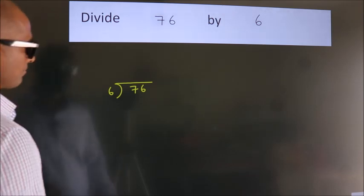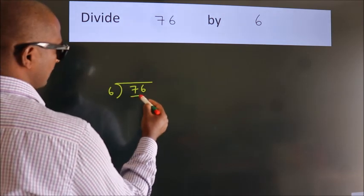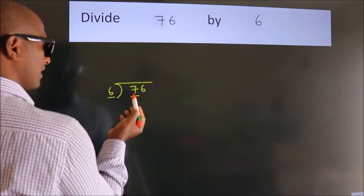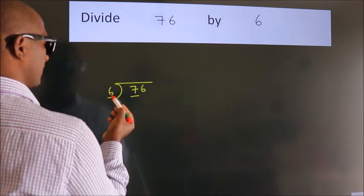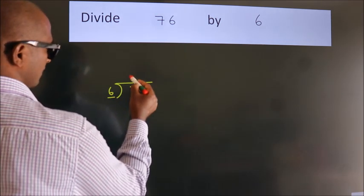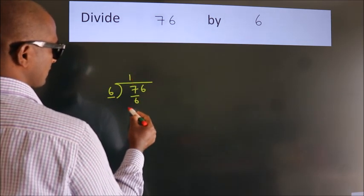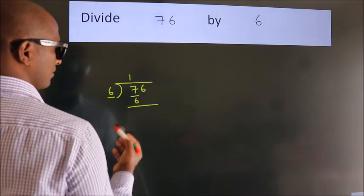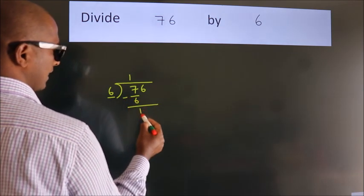Next. Here we have 7, here 6. A number close to 7 in 6 table is 6 ones, 6. Now, we should subtract. We get 1.